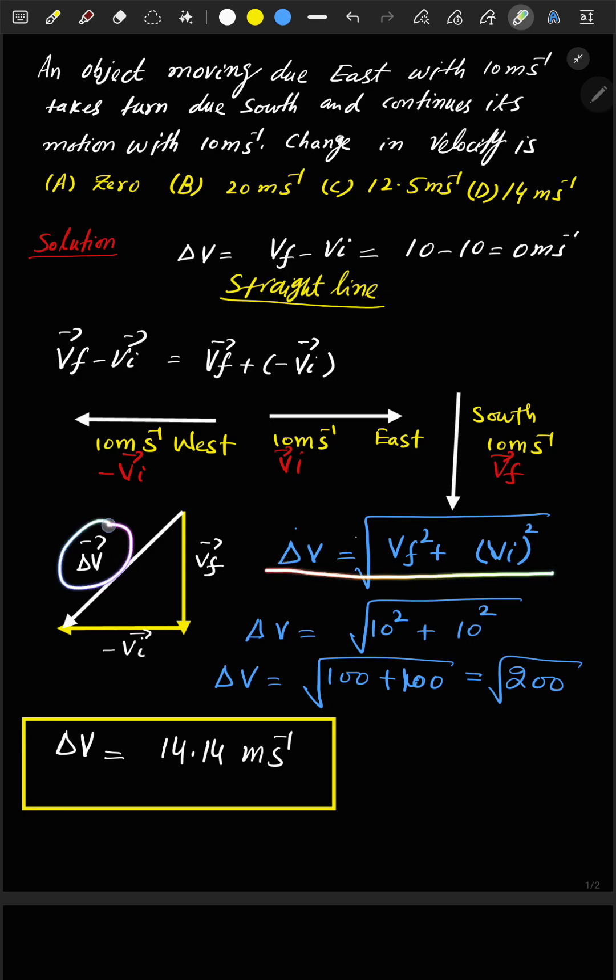By this simple formula, we get the square root of 200, and finally it is 14.14. This answer is closer to option D, so that is the correct option. Thank you.